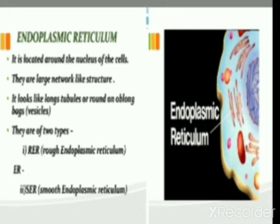We can also define endoplasmic reticulum as a complex network of membrane-bound tubes present inside the cytoplasm. This means the endoplasmic reticulum is a two-ply structure and is interconnected. It does not have a specific shape and size — it looks different in different cells depending on what cell it is present in.